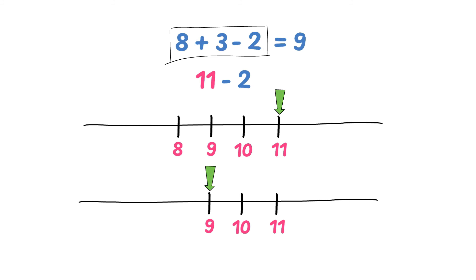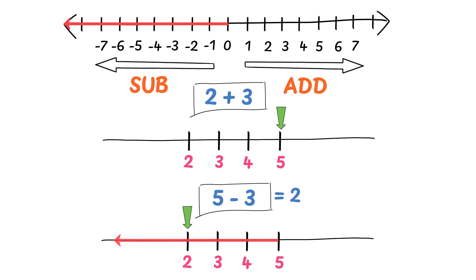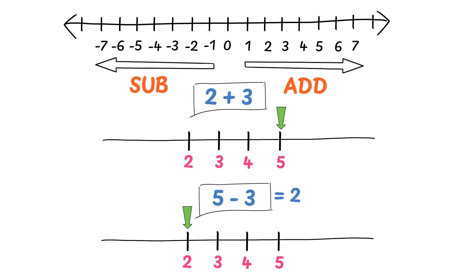To summarize: we have learned that if we need to add an integer, we have to travel or move towards the right on a number line, like 2 plus 3. Secondly, if we need to subtract an integer, we have to travel or move towards the left, like 5 minus 3. This was all about adding and subtracting integers using a simple method.